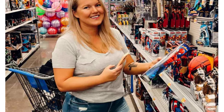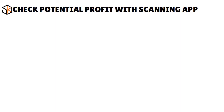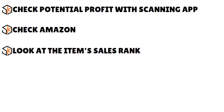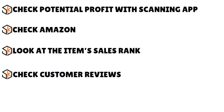You might want to gather some competitive intel and know exactly what your rivals are doing so you have a clear idea on how to proceed. Whatever tool you use, check the potential profit you can make with this scanning app. Check Amazon to make sure the tool you choose actually has an integration with Amazon. Look at the item sales rank — it's very important so you have a clear idea of where the items actually rank.